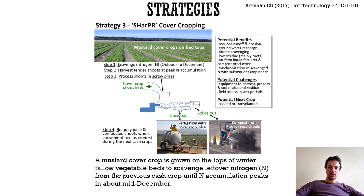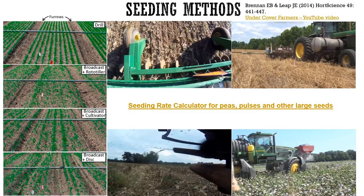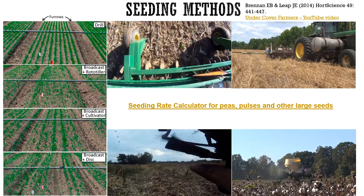Another strategy involves scavenging residual nitrogen with mustard or other non-leguminous cover crops grown in autumn, harvesting the biomass, and transforming it into compost and liquid fertilizer. This can be applied to the subsequent vegetable crop through fertigation during its period of nitrogen demand. Right after harvesting, the bed is ready for the winter vegetable crop with minimal tillage. Stands that are sufficiently dense soon after planting are more likely to suppress weeds, scavenge nutrients, and reduce erosion.